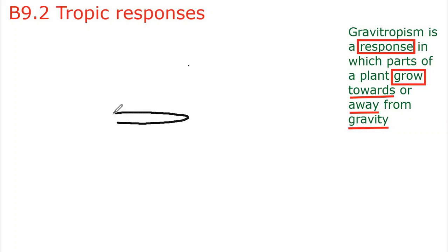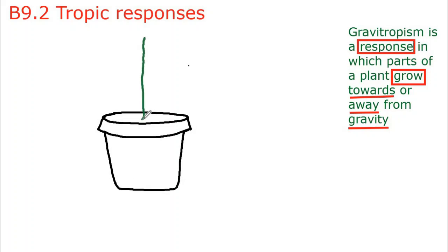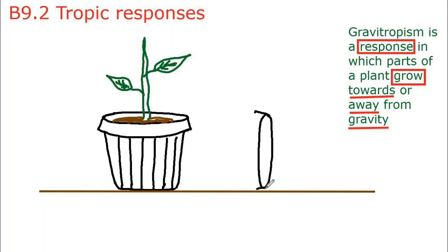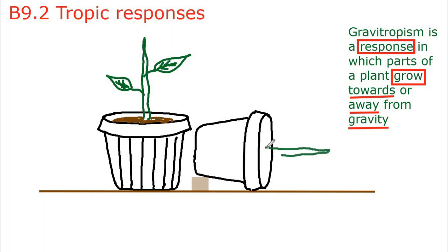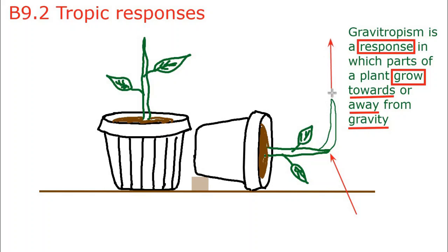Gravitropism can be investigated experimentally using a potted plant — a plant grown in a pot that can be easily transported. Once a small seedling has grown a little, if the pot is tilted sideways, the shoot of the plant will start bending away from gravity. This part of the diagram shows the growth of the shoot once the pot was tilted and then uprighted — the shoot bends upward and continues growing in the opposite direction of gravity.